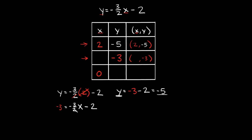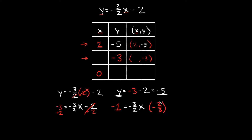So let's solve for x. The first thing you can do is get rid of this minus 2 by adding 2 on both sides of the equation, so these 2s cancel each other out. On this side we have negative 3 plus 2, which is equal to negative 1. So negative 1 is equal to negative 3 halves times x. Now we need to get rid of this fraction, and the way you undo the fraction is you multiply by the reciprocal. Here we have negative 3 halves, so I'm going to multiply both sides by the reciprocal, which would be negative 2 thirds.